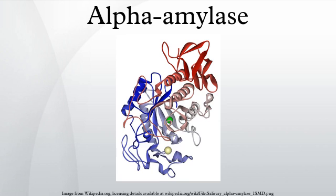Alpha-amylases contain a number of distinct protein domains. The catalytic domain has a structure consisting of an eight-stranded alpha-beta barrel that contains the active site, interrupted by a 70-amino acid calcium-binding domain protruding between beta-strand 3 and alpha-helix 3, and a carboxyl-terminal Greek key beta barrel domain. Several alpha-amylases contain a beta sheet domain, usually at the C terminus, organized as a five-stranded antiparallel beta sheet. Several alpha-amylases also contain an all-beta domain, usually at the C terminus.